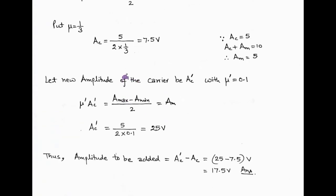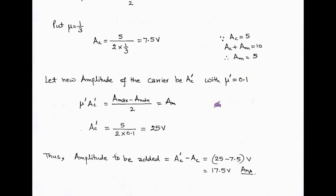Now, in order to obtain the new modulation index of 0.1, we have to determine the new carrier amplitude ac dash. For this, we use mu_dash times ac_dash equals am. In place of mu_dash, we write 0.1, and we get the new carrier amplitude ac_dash equals 25 volts. The amplitude which must be added to get a modulation index of 0.1 is ac_dash minus ac, that is 25 minus 7.5, which equals 17.5 volts.